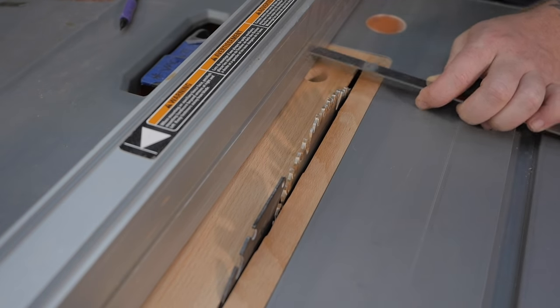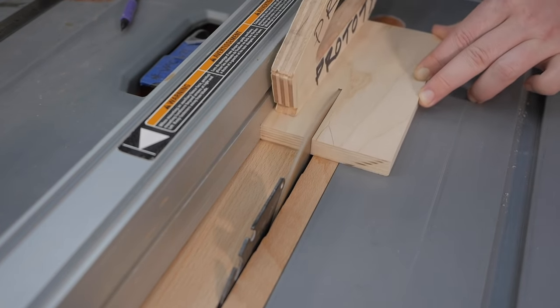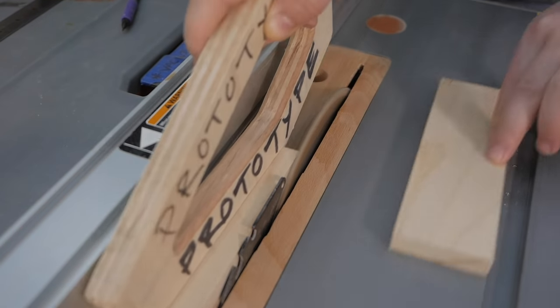Now while that's drying, I cut the 10 degree sliding dovetail for the fence system at the table saw, again, sneaking up to the final dimensions.